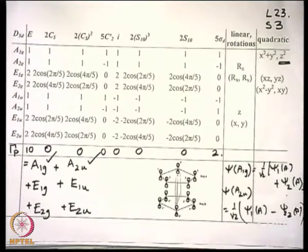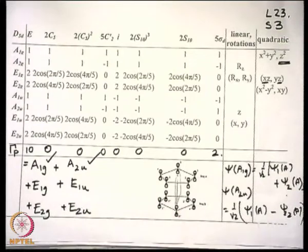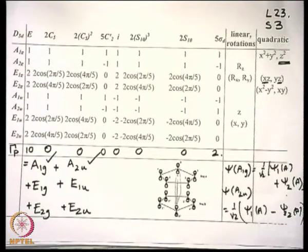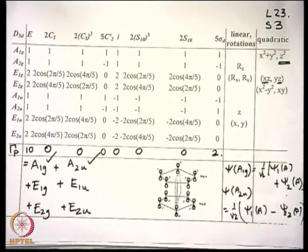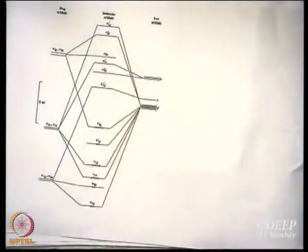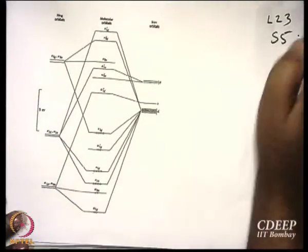So these are the SALCs of the ring: you have A1G, A2U, E1G, E1U, E2G, E2U. Now tell me in D, what are the different symmetries? A1G, E1G, E2G. What about S? This is A1G. What about P? A2U, E1U. And D? E1G, E2G.